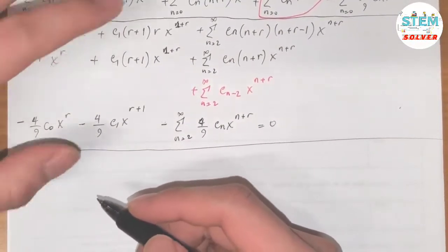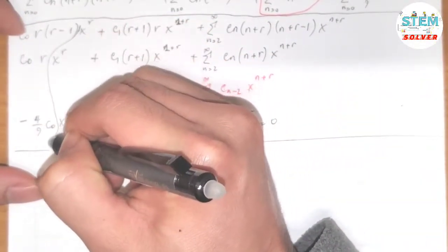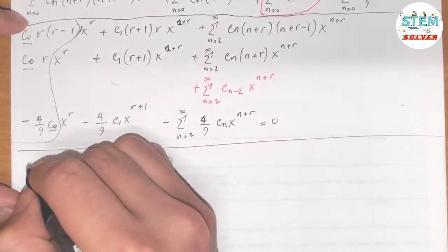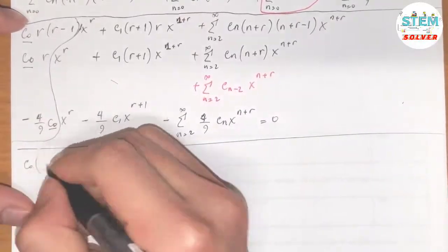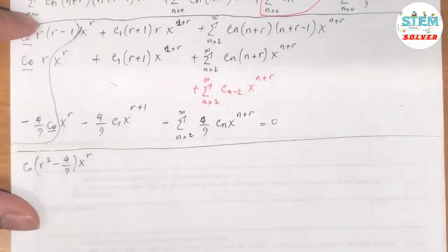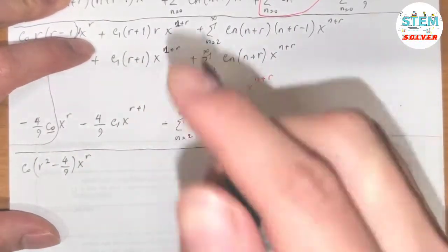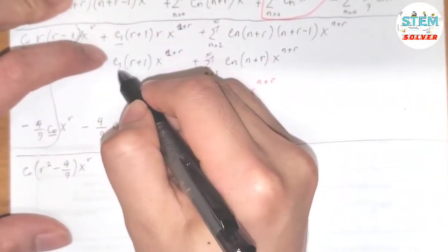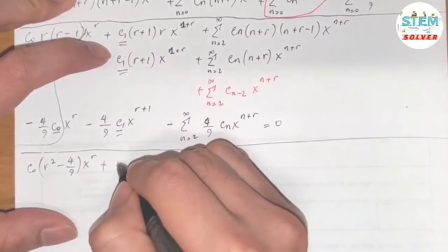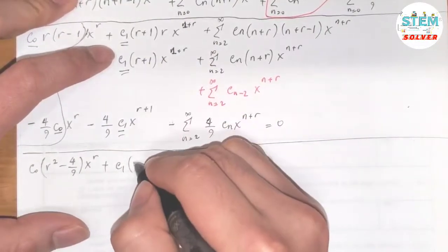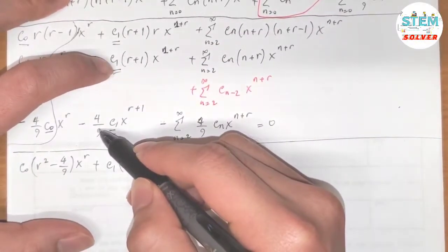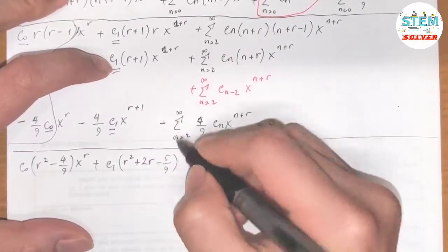Now we combine like terms. For x to the r, factor out c0: we get r(r−1) plus r minus 4/9, which simplifies to r² − 4/9. For x to the r+1, factor out c1: we get (r+1)² plus (r+1) minus 4/9, which gives r² + 2r + 1 − 4/9. Simplifying: c1 times (r² + 2r − 5/9) equals 0.